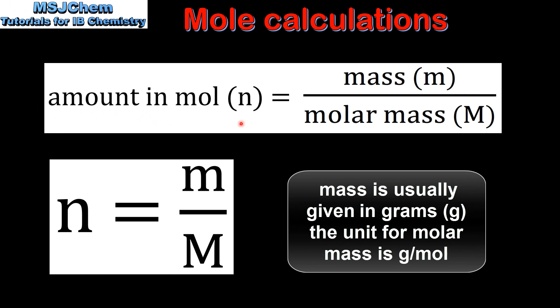The amount in moles of a substance equals the mass of the substance divided by its molar mass. This can be written as n, which is amount in moles, equals m, which is mass, divided by M, which is molar mass.